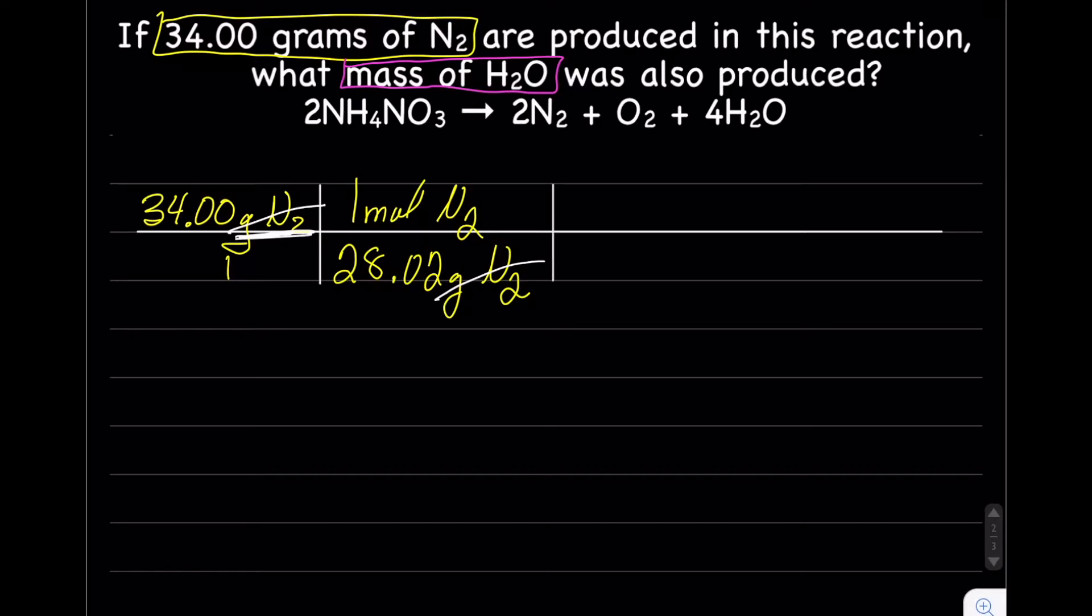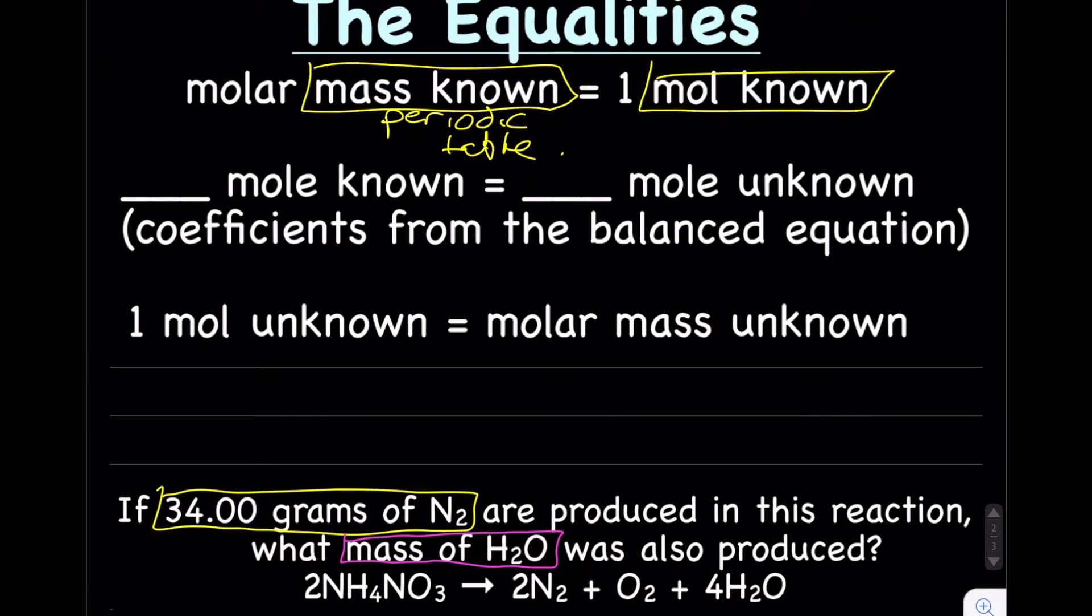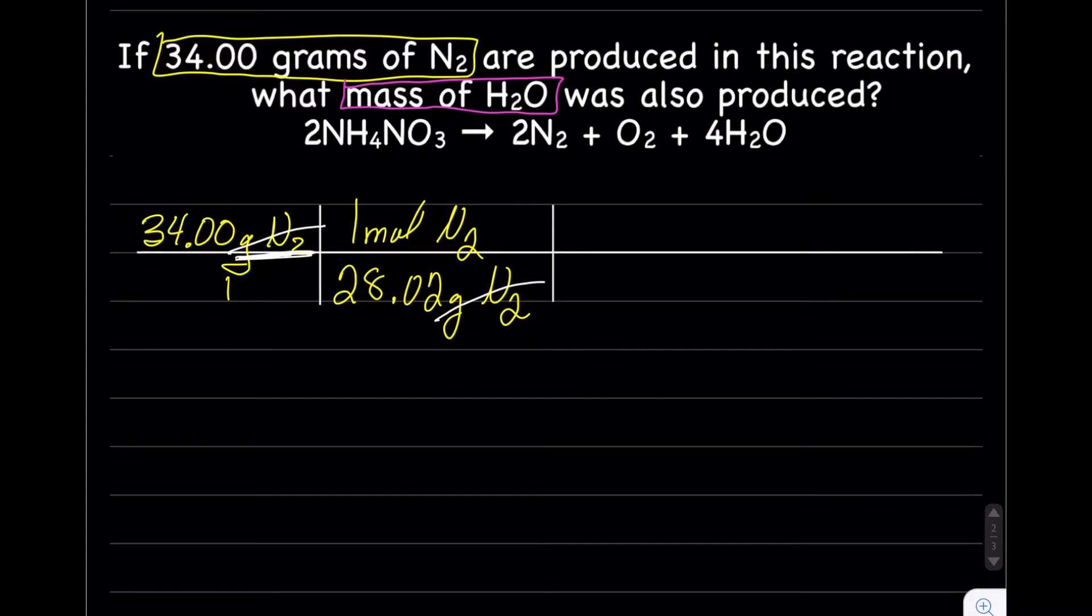So we're at mole N2. N2 is our known. So where do we go from here? We're going to use mole known equals mole unknown. And our blanks are the coefficients from the balanced equation. So our known was N2, our unknown was H2O. So for every two mole of our known, or N2, we also produce four moles of our unknown, or H2O.